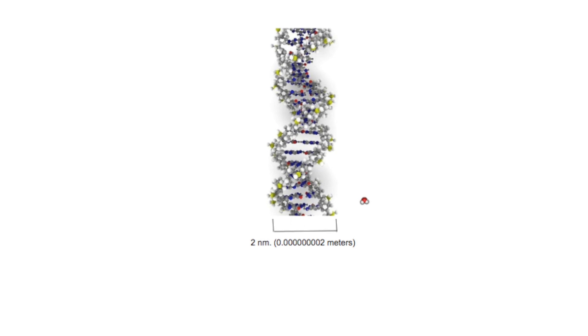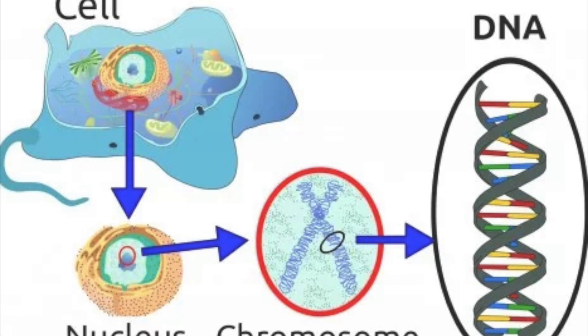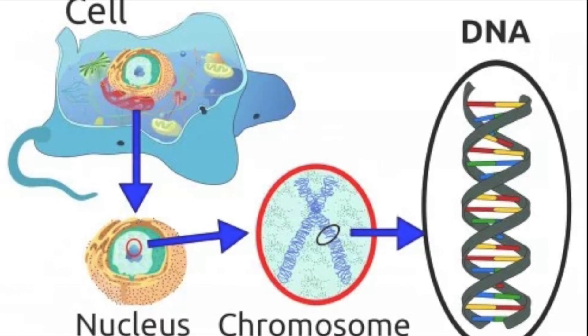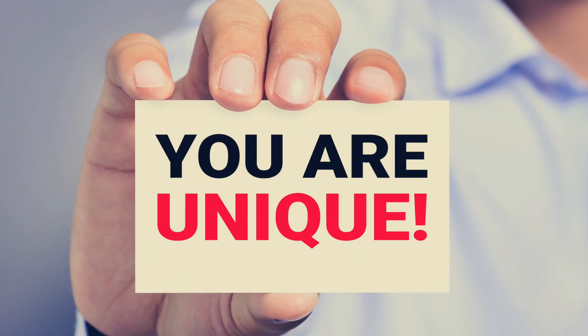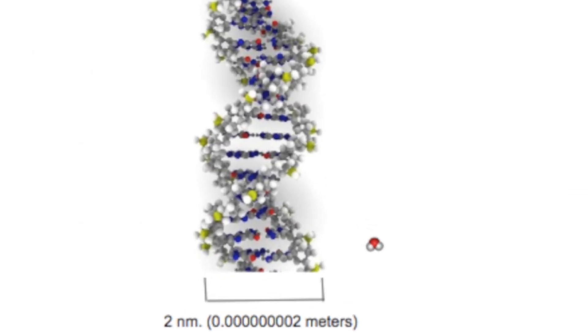Shown here is DNA. These double helices are present in almost every living organism and carry all the genetic information that makes you unique. Now, finally, let's enter the scale of atoms.